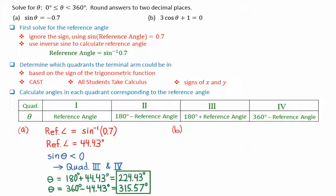For question B, 3 cos theta equals negative 1. We've simply moved the plus 1 over to the right side of the equation. And then dividing both sides by 3, we get cosine of theta equals negative one-third. We figure out the reference angle using inverse cosine of positive one-third. This gives a reference angle of 70.53 degrees.